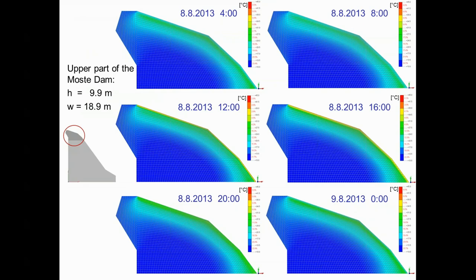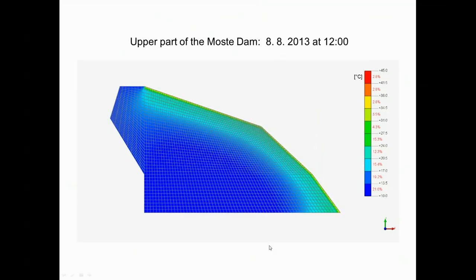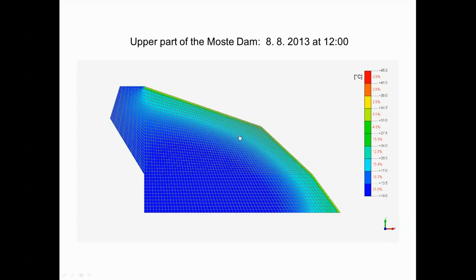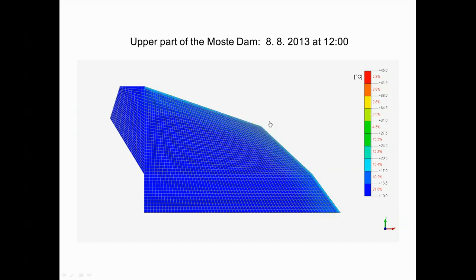The calculated temperature fields of the upper part of the Moste Dam are displayed for August 8, 2013, with a four-hour interval. The greatest changes in concrete temperature were found in the narrow area near the surface of the insolated downstream side of the dam, while the influence of convection on the wet upstream side was not noticeable. The greatest influence on the temperature field is found up to about 2 meters below the surface of the insolated downstream side.